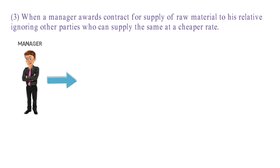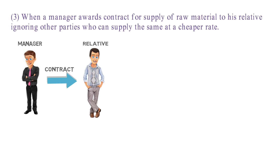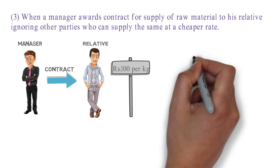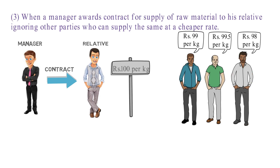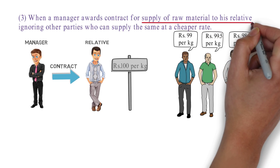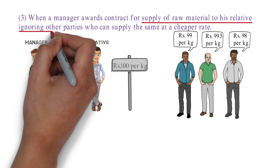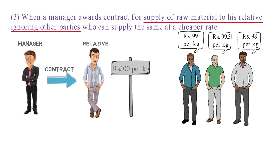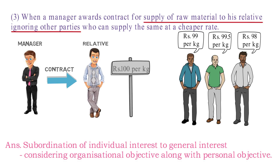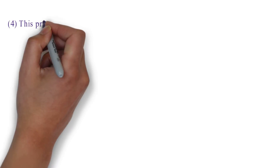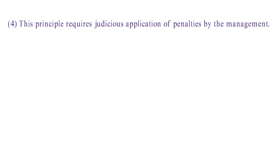Number three: when a manager awards a contract to his relative who supplies goods at a higher price compared to other parties in the market who supply at a cheaper rate. The keywords are 'supply of raw material to relative, ignoring other parties.' The principle violated is Subordination of Individual Interest to General Interest, because he is fulfilling personal objectives and avoiding organizational objectives.